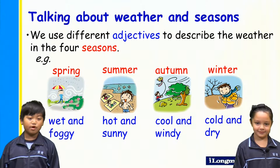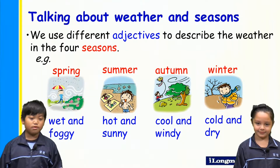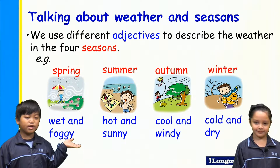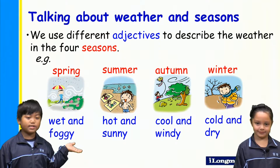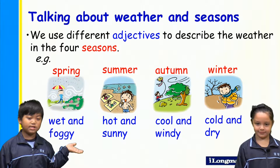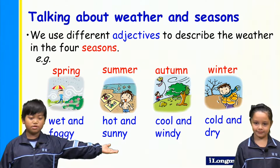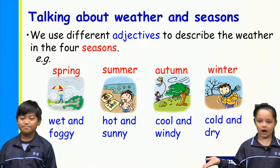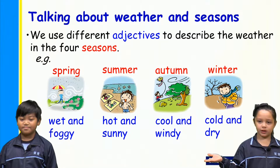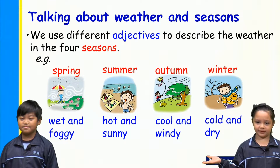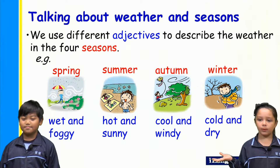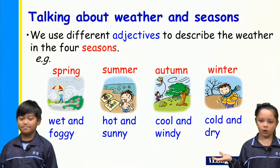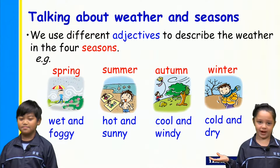For example, spring: windy and foggy. Summer: hot and sunny. Autumn: cool and windy. Winter: cold and dry.